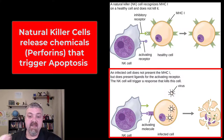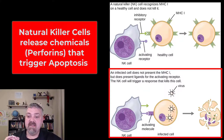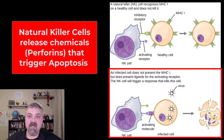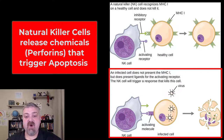Here at the bottom, the NK cell has deposited its payload — primarily these perforin chemicals — that's going to cause this cell to kill itself, while the NK cell reloads so it can go and do it again and again. So that is immunological surveillance, the primary function of the NK, or natural killer cell.